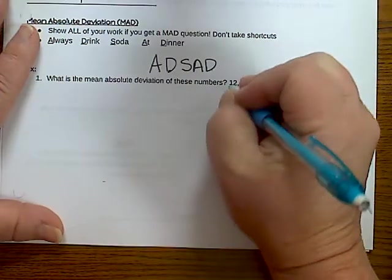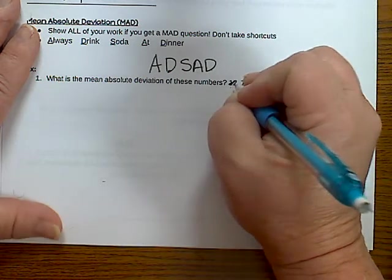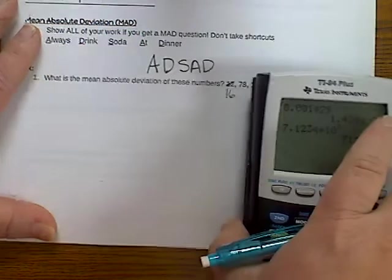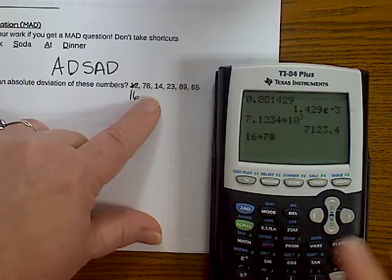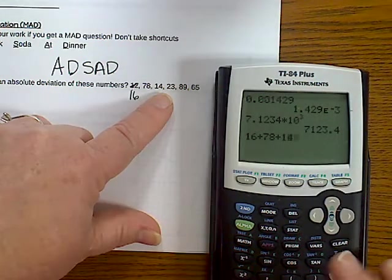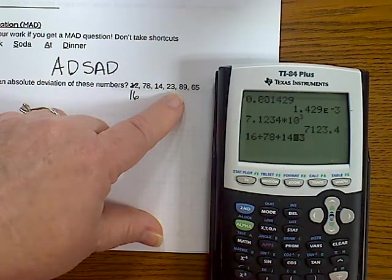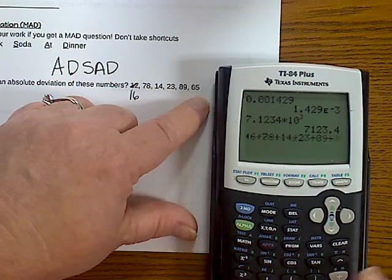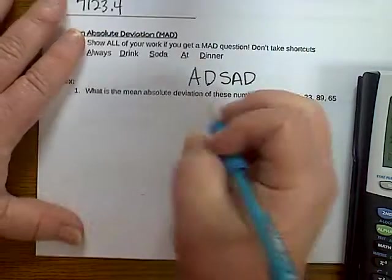So here we go. We're going to add our numbers first. 16 plus 78 plus 14. And I'm checking them after I put each one in. Uh-oh. See what I did when I'm talking? So I've got to go put plus 23 plus 89 plus 65. And hit enter. And I get 285.